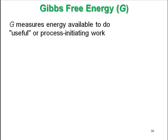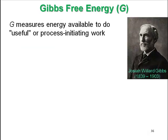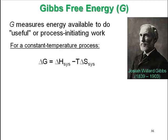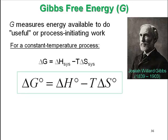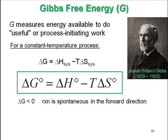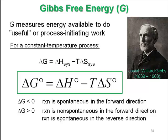G measures the energy available to do useful process. Josiah Willard Gibbs for constant temperature process says that delta G equals delta H system minus T delta S of the system. Delta G is negative, reaction is spontaneous in the forward direction. It's positive, reaction is non-spontaneous in the forward direction, it's spontaneous in the reverse. And delta G equals zero, the reaction is in equilibrium.